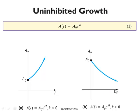As t becomes large, the quantity will never get below zero, so the t-axis acts as a horizontal asymptote.